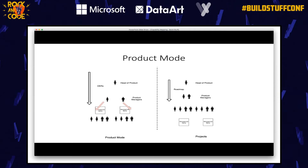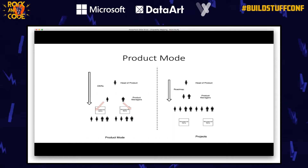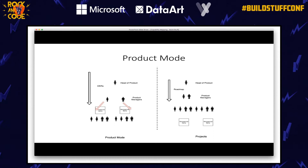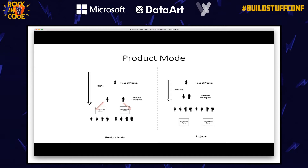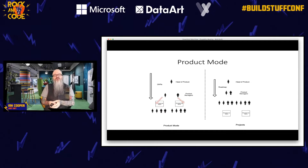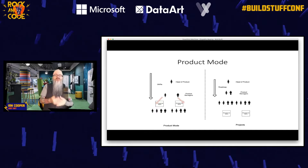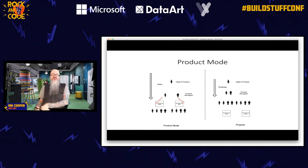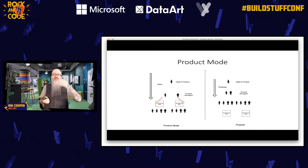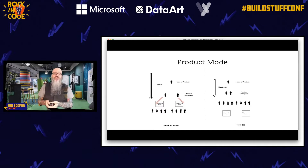Independent deployability enables what we call product mode: your microservice has its own backlog prioritized by business value, controlled by a product owner, aligned to organizational OKRs. You can continue to iterate and add value independently of what anyone else in the organization is doing. We want to avoid program mode, where multiple teams must coordinate delivery — program mode creates inventory waste and delays value to customers. The Pareto principle applies: 80% of time in product mode, 20% in program mode.